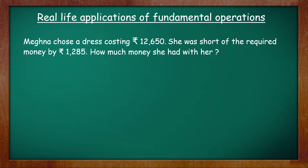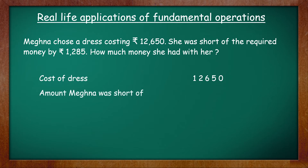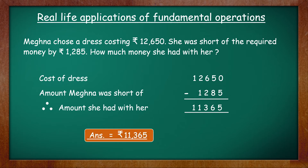Let's begin with the first statement. Meghna wanted to buy a dress, so we can use the term cost: cost of dress rupees 12,650. The next statement will be the amount she was short of: amount Meghna was short of is rupees 1,285. And the final statement is: therefore, amount she had with her. Put the minus sign and subtract. The difference is 11,365. The answer is rupees 11,365 — don't forget the comma, and the unit rupees is written before the number.